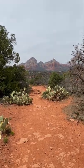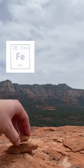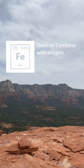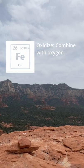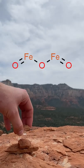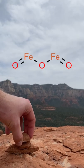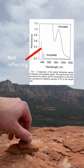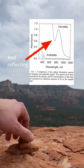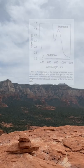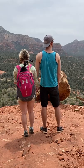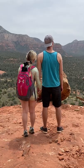Inside these rocks, the element iron rusts, or oxidizes, to form an iron oxide called hematite. This iron oxide now only reflects red and absorbs everything else, giving us these beautiful views. So share this next time your friends ask.